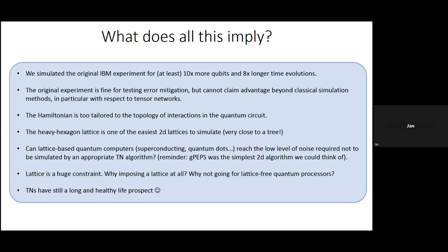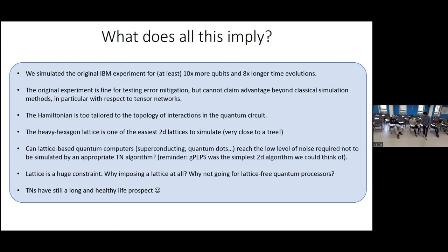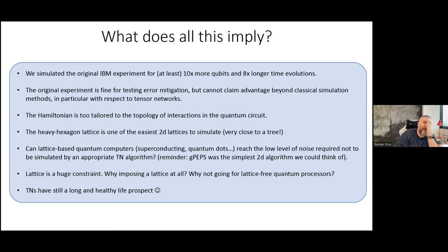Michael asked: in the competition between quantum advantage claims and tensor network simulations — where exactly is the room for quantum computing? Quantum advantage is a concept that is very hard to achieve because it's a moving target. As quantum methods improve, classical algorithms are also challenged, as happened here. But I think this competition is necessary and healthy — it's exactly what needs to happen to eventually build a quantum computer with one million error-corrected qubits.